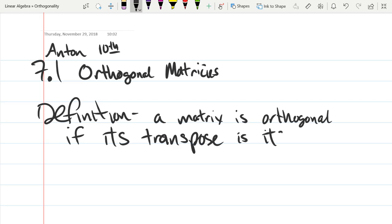So a matrix is going to be orthogonal if its transpose is equal to the inverse.